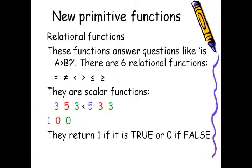So for example, if I say 353 is smaller than 533, well, only 3 is smaller than 5. All the other ones are not true. And it returns 1 if it's true, 0 if it's false.